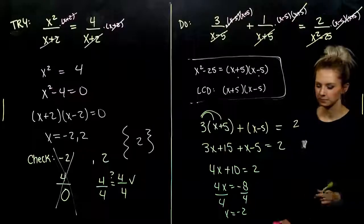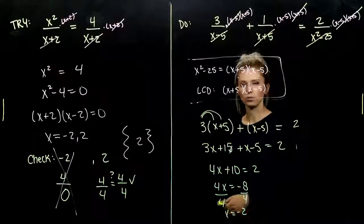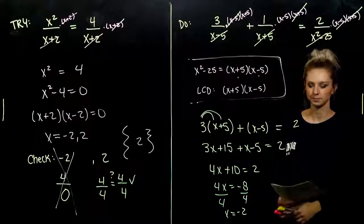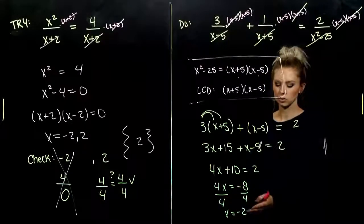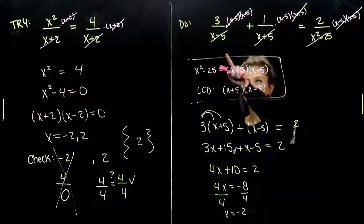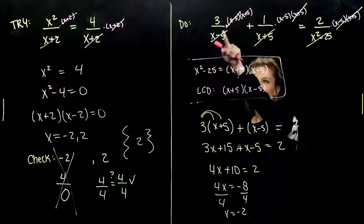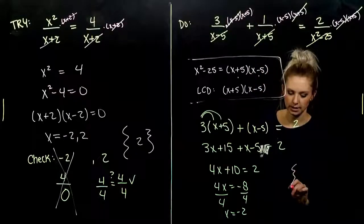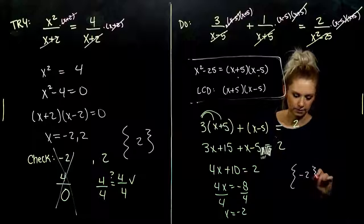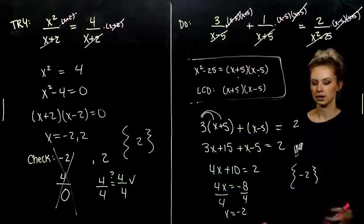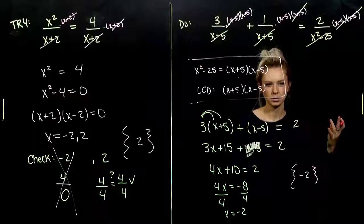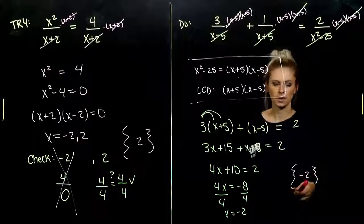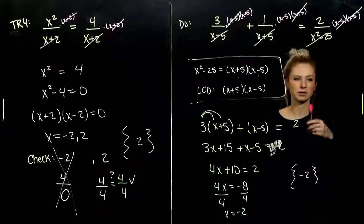But we need to check. If I plug in negative 2 into the original, do I cause any of the denominators to explode? Is this solution even reasonable? So, let's see. If I plug in negative 2 into X, I get a whole number there. Whole number. Whole number. So, we're good. Solution set in that case is negative 2. And if we want to be very thorough, we can actually calculate the values out. But more often than not, we're just checking to see if any of those values cause one of the denominators to turn into zero.